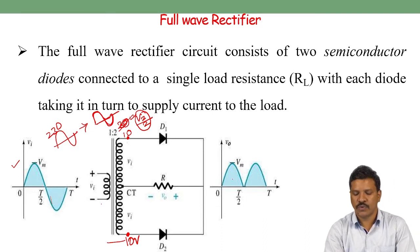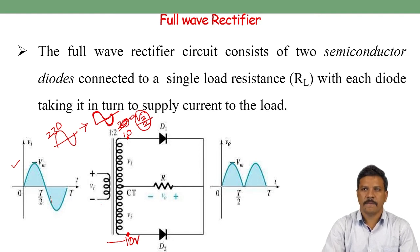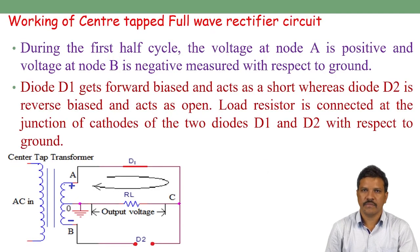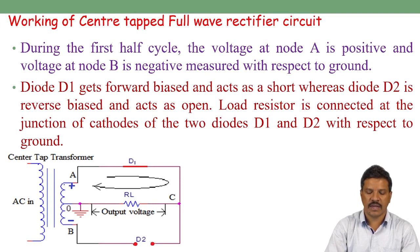This center tap transformer is helpful to achieve rectification of both cycles of the AC input signal. By providing this arrangement, during both positive and negative cycles, both will be rectified. The operation of the full wave rectifier can be explained by two cases: what happens during the positive half cycle, and what happens during the negative half cycle.